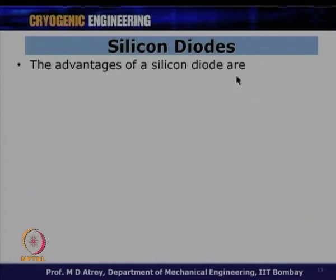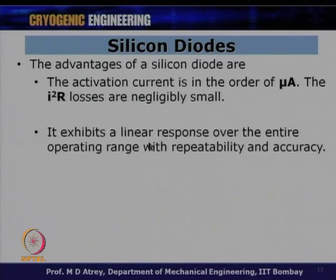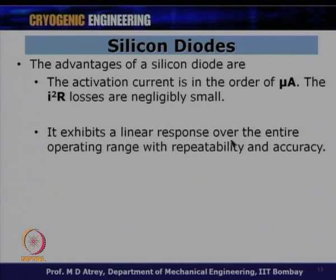The advantages of a silicon diode are that the activation current is in the order of microamps — just 10 microamps — so I²R losses are negligibly small. It exhibits a linear response over the entire operating range with good repeatability and accuracy, which is what is expected from a good sensor.